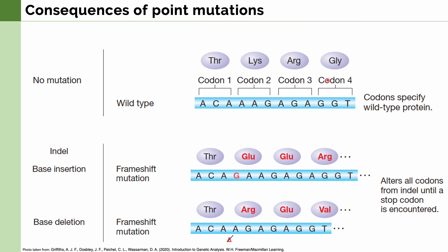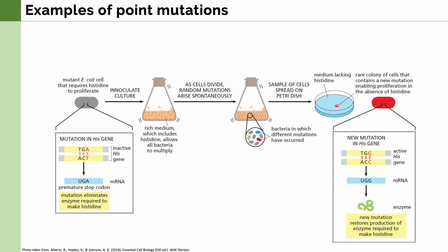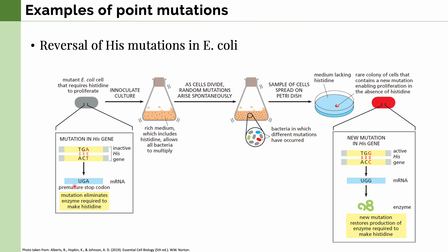As we mentioned in our previous lecture, it is essential for a ribosome to find the correct reading frame in order to create a functional protein. Let's have some examples of point mutations. Here we can see a mutation in the HIST gene found in the actual coding sequence. This mutation creates a premature stop codon — in other words, this is a nonsense mutation. As a result, the mutation eliminates the enzyme required by E. coli to create the amino acid histidine.